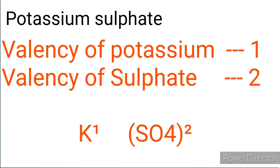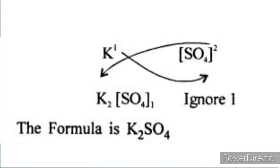Next, write the valency of each atom on the top of its symbol. The valency of potassium is 1 and the valency of sulphate is 2. Divide the valency numbers by their highest common factor if any to get the simple ratio. Here the common factors are not there, so write as usual. Next, interchange the valency and write the numbers to the lower right of the constituents as their subscript. Hence, the formula for potassium sulphate is K₂SO₄.